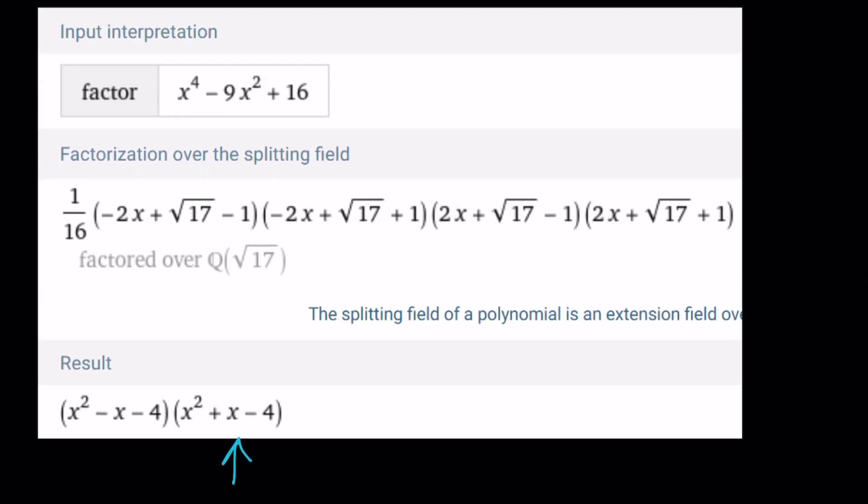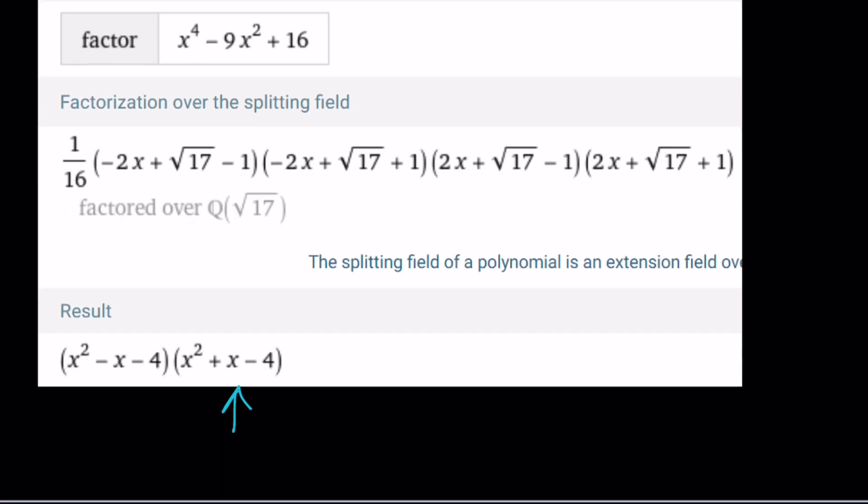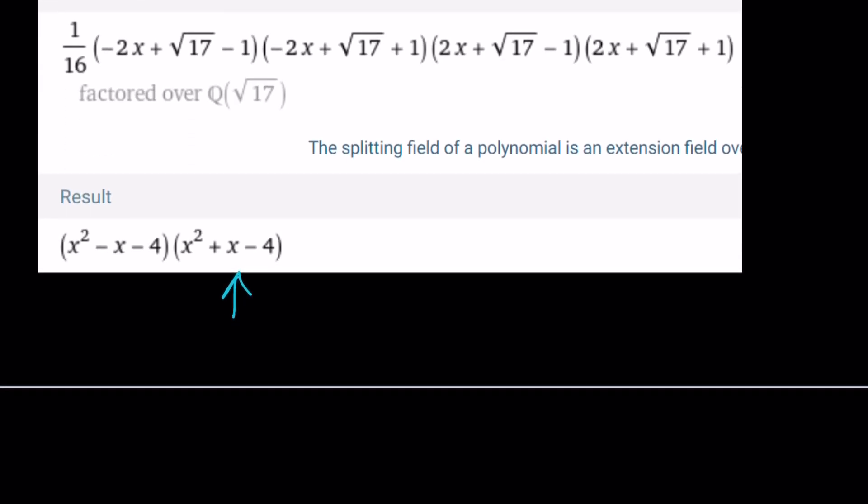You also notice that there's a different way of factorizing or factoring. British people say factorize. So, factoring this over the splitting field and you can find this from Wolfram Alpha if you enter it. It's factored over the set of irrationals or the splitting field of square root of 17. Anyways, so you can basically factor. This is the goal. This was my goal. Basically, I was trying to get two factors like this.